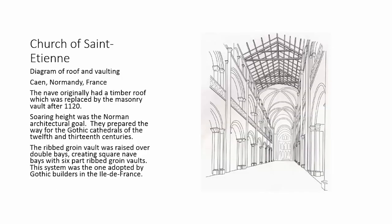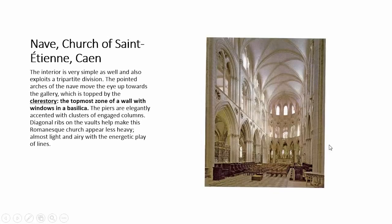This church originally had a timber roof. In 1120 they replaced it with a masonry vault. The Normans are trying to gain height, and this multi-part division of ribs in ribbed vaults is one way they're beginning to achieve that. This is preparing the way for Gothic cathedrals of the 12th and 13th centuries — this is the system Gothic builders adopted in the Île-de-France, people like Abbot Suger.